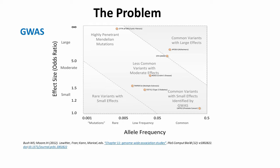This next slide brings together data from a number of genome-wide association studies and comes from the 2012 Bush-Moore paper. The graph shows how common disease-implicated variants are within a population, and also how likely it is to display a particular trait or disease if the variant is present in an individual's genome. Variants towards the top of the graph indicate higher likelihood of displaying the trait; variants towards the right indicate higher frequency in the population.